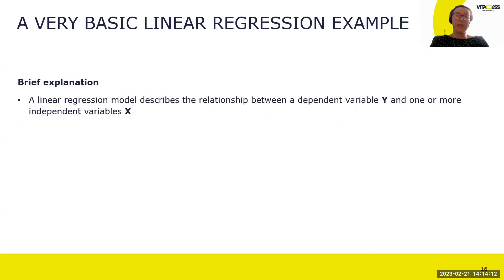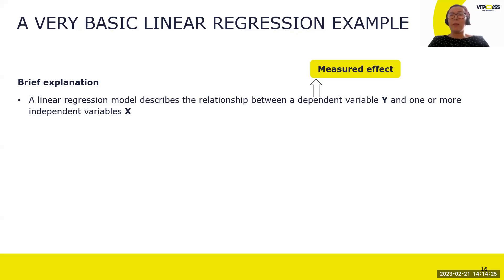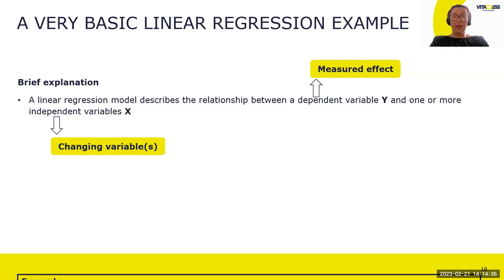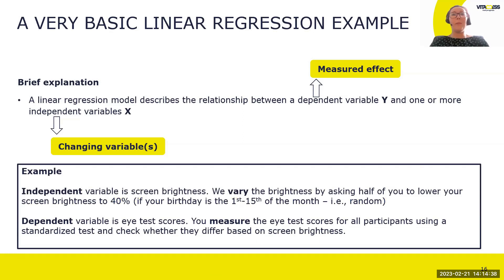Here is a brief linear regression example. A linear regression model describes the relationship between a dependent variable and one or more independent variables. The dependent variable is the measured effect; the independent variable is the changing or varying variable. A simple made-up example: the independent variable is screen brightness — if we randomly vary brightness, asking half the audience to lower it to 40%, the dependent variable being measured is the eye test score, and you compare the two groups.